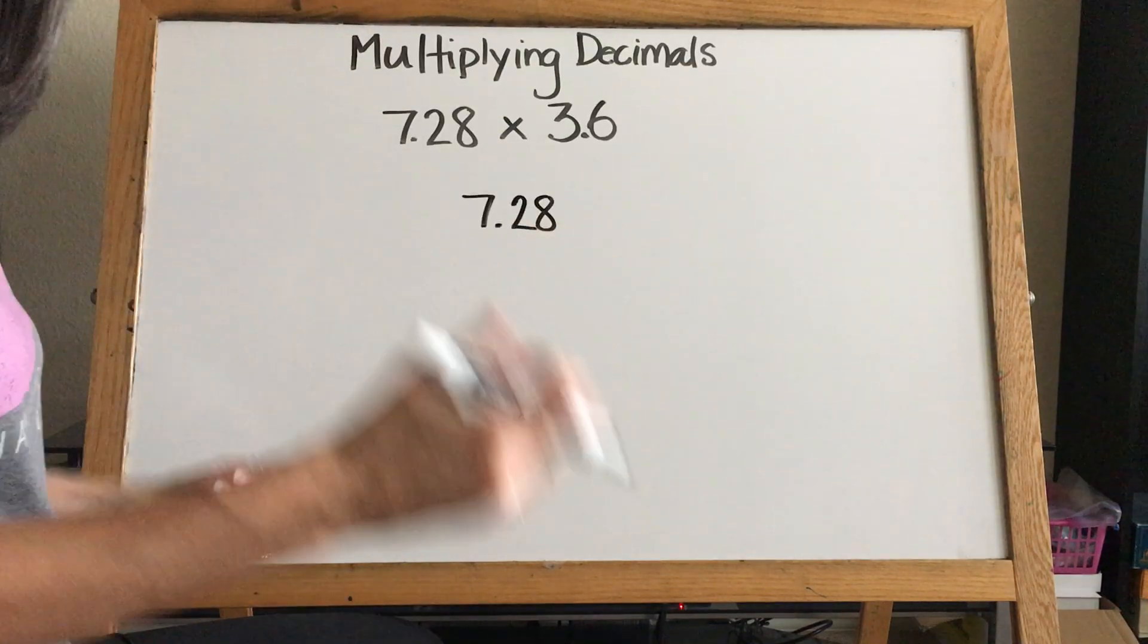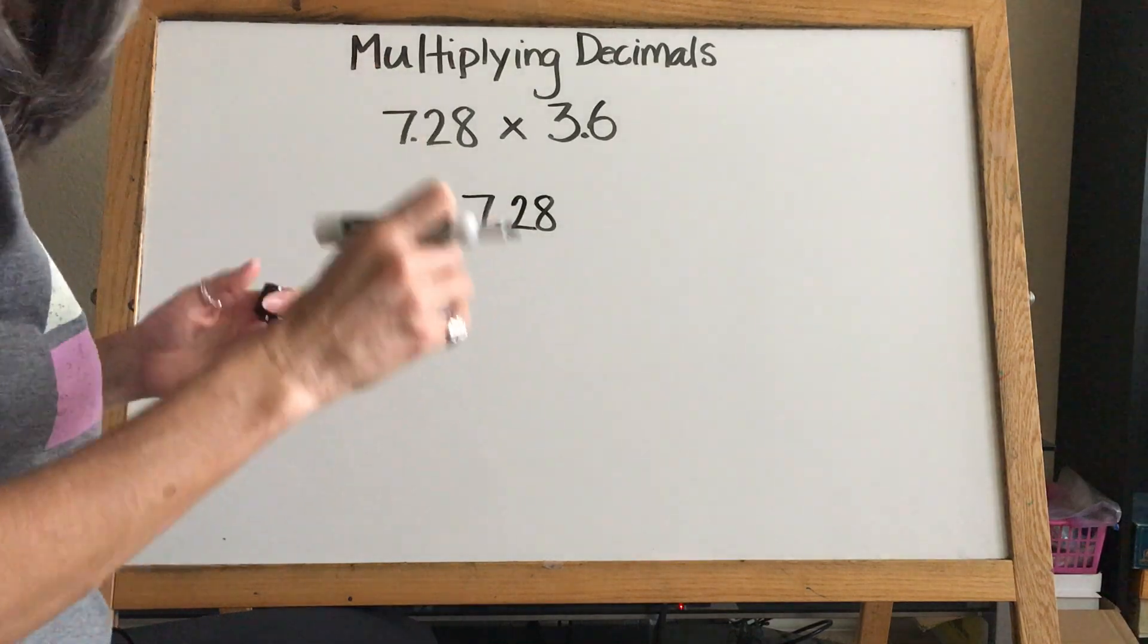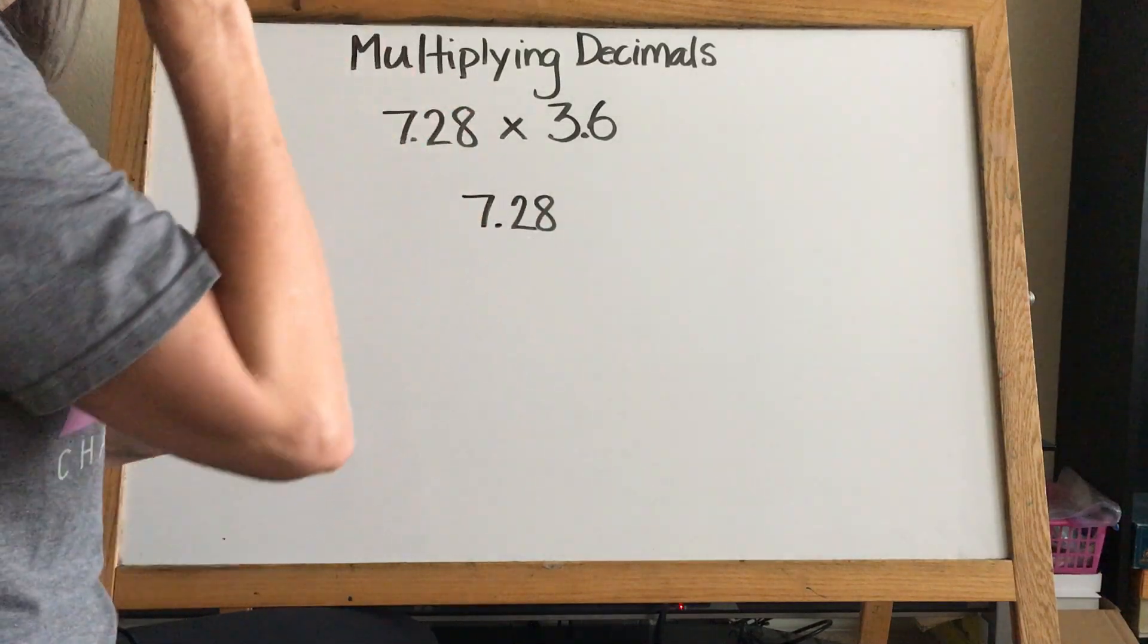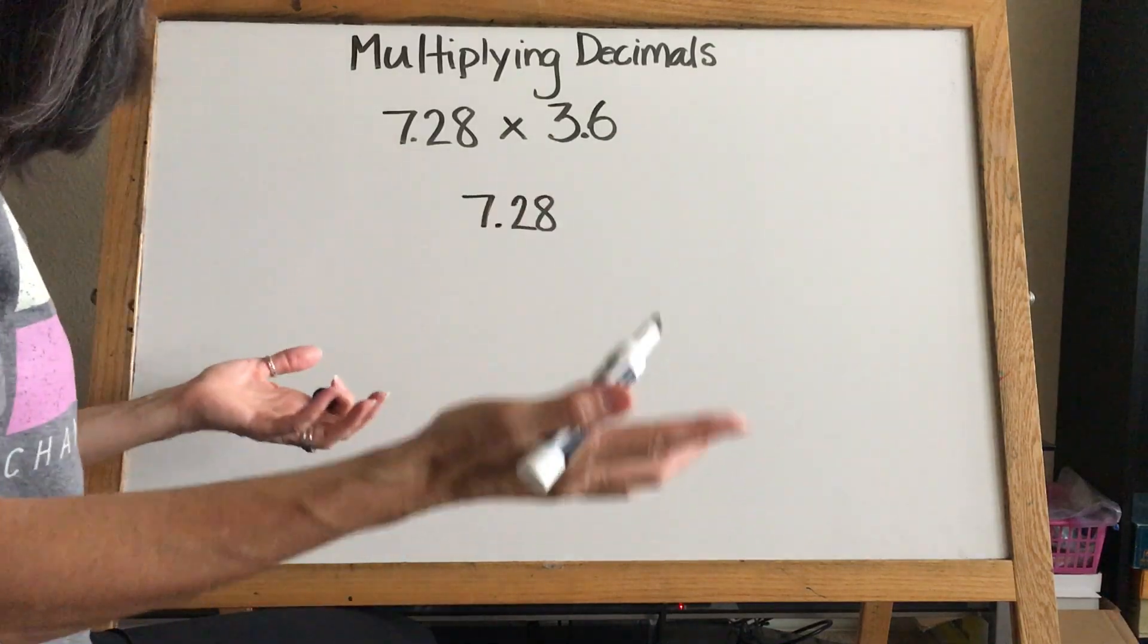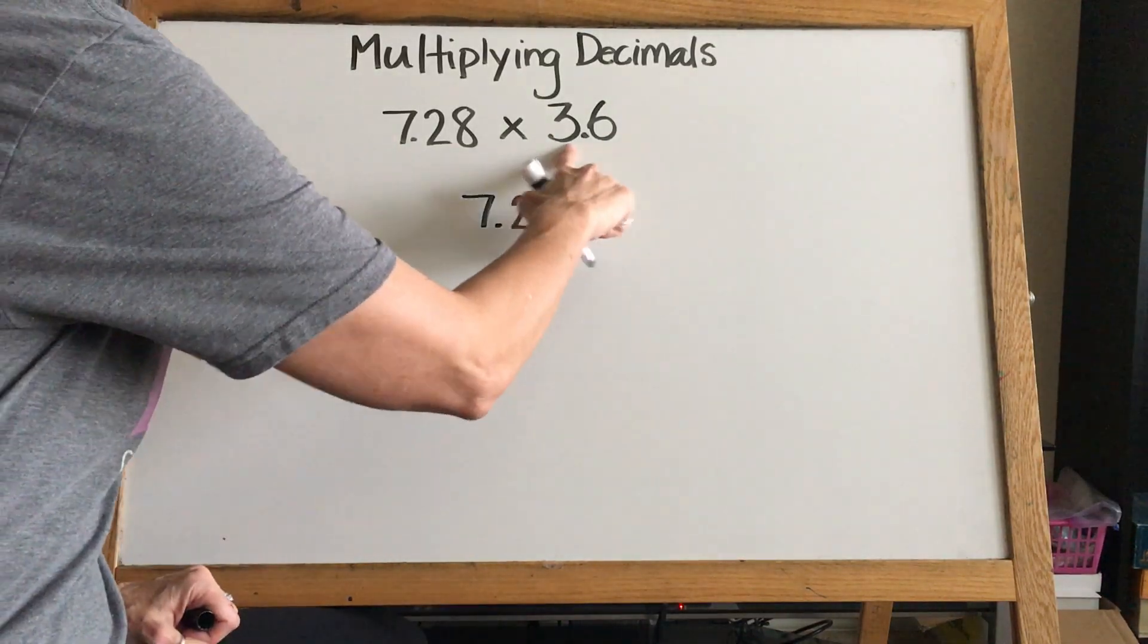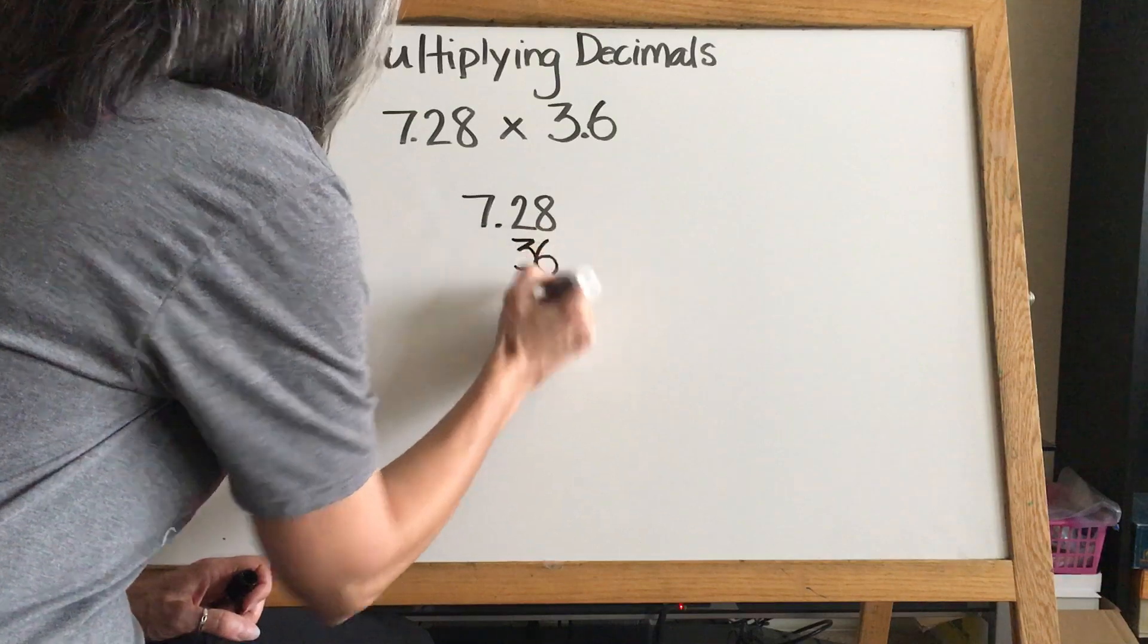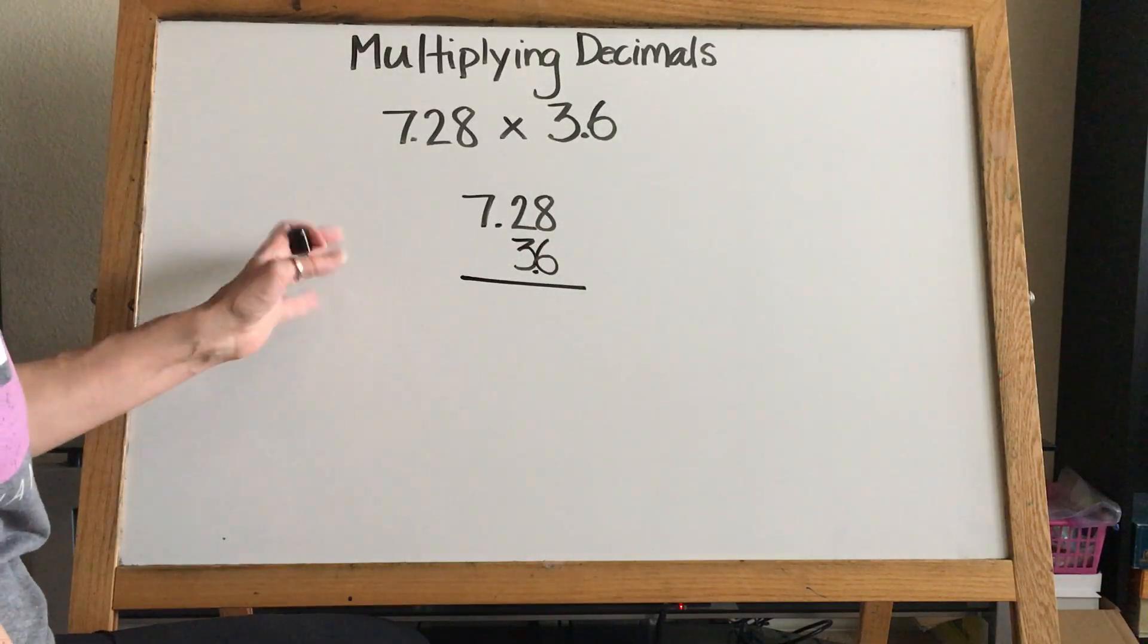We're used to with adding and subtracting decimals to line up our decimals, but we don't do that when we multiply. That's where we have to remember - there's certain rules for certain things. With multiplying decimals, we don't want to line them up. Sometimes they do naturally line up on their own, but we don't purposely do it. We almost look at this number like it's just 36. Where would we put that if it was 36? We'd put it right here. But we're going to add our decimal because we're going to need that for our answer.